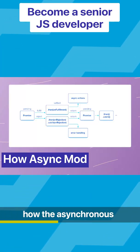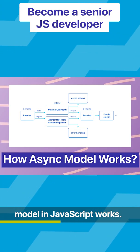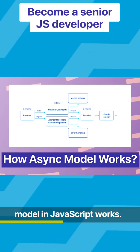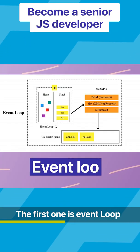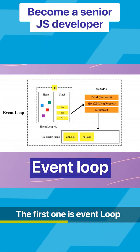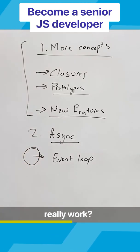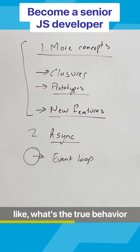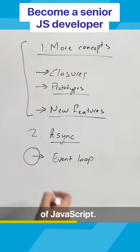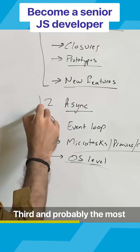The second thing is how the asynchronous model in JavaScript works — the first one being the event loop. How does JavaScript really work? What's the true behavior of JavaScript?